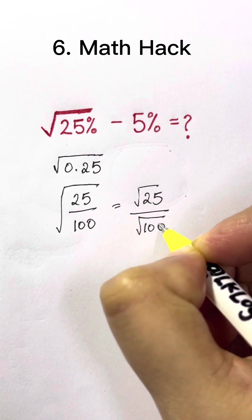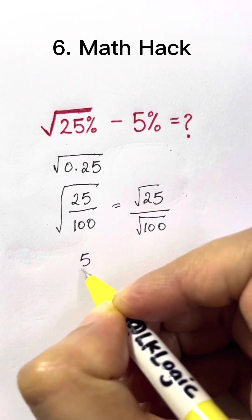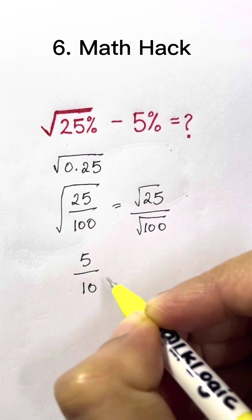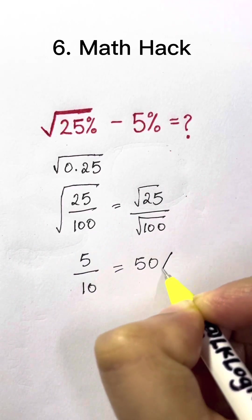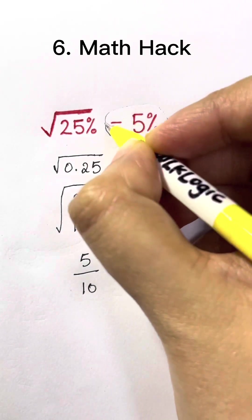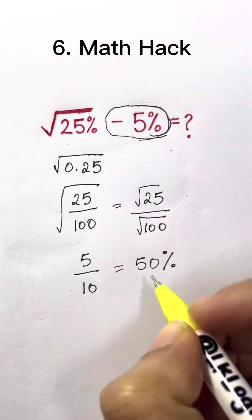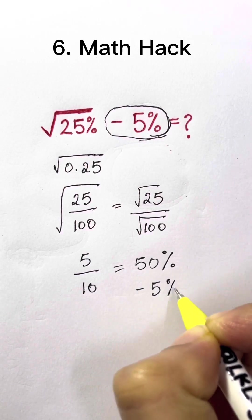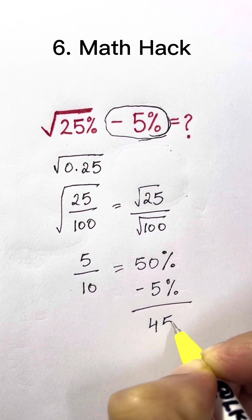As we know, square root of 25 is 5, and square root of 100 is 10. So 5 over 10 is 50%. Let's subtract 5%. 50% minus 5% gives us 45%. You're done.